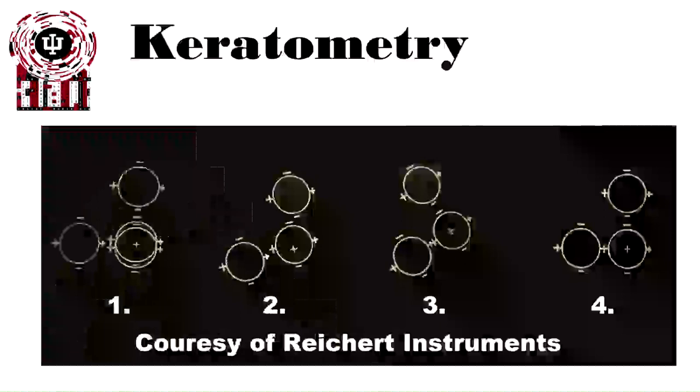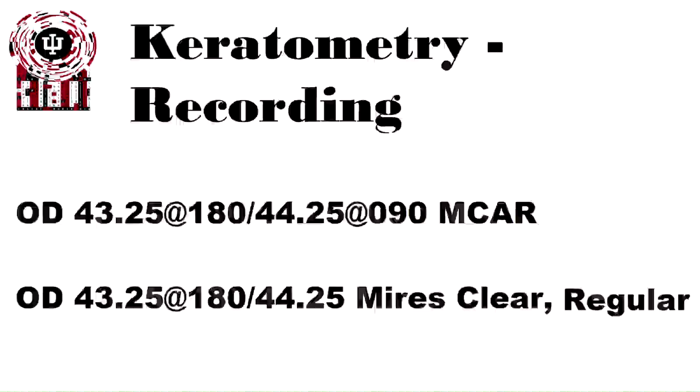The keratometer works by focusing two different images to the cornea and aligning them to measure curvature. In step one, the image is out of focus, so you align it to focus properly. In step two, it's focused, but you need to find the right axis — whether it's at 180 and 90, or at a different degree — so you rotate to find the correct axis. In step three, once rotated to the right spot, you adjust the power wheels to determine the correct power. In step four, the horizontal meridian circles are aligned to measure horizontal power, but the vertical meridian still needs to be adjusted.